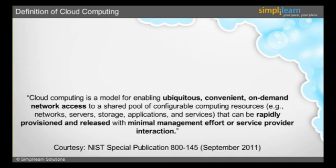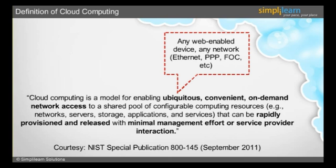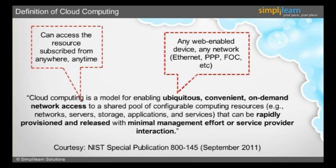Let us understand this definition by focusing on the key words. Ubiquitous means irrespective of any type of network or any type of web-enabled device. We can access the services subscribed from the service provider. Cloud computing takes the technology, services, and applications that are similar to those on the Internet and turns them into a self-service utility.